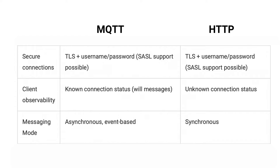A significant advantage of MQTT over HTTP is client observability. MQTT allows client state to be monitored via notifications when a client unexpectedly disconnects, which is not possible in HTTP. MQTT has asynchronous, event-based messaging, which means the publisher doesn't have to wait until the consumer consumes the data because of decoupling — this is a very scalable way of communication. This is not the case for HTTP, where messaging is synchronous.